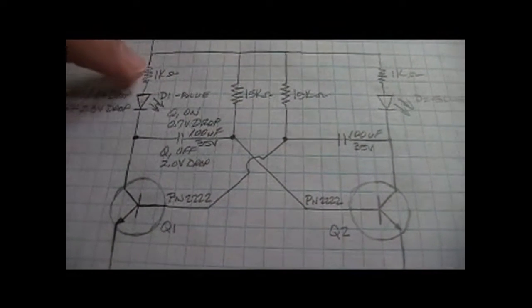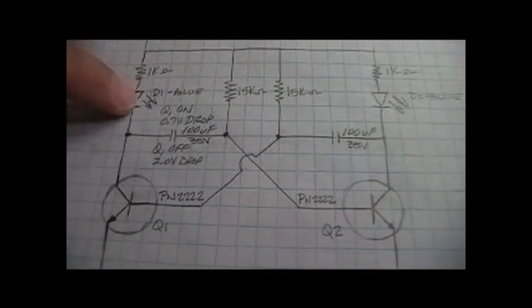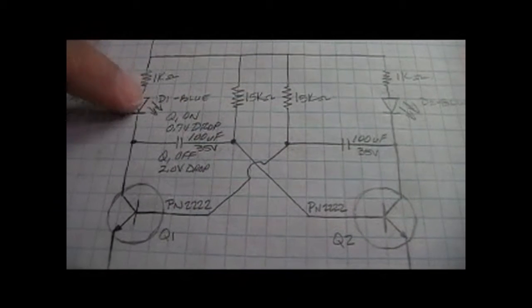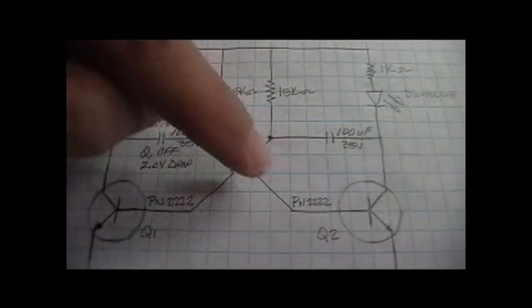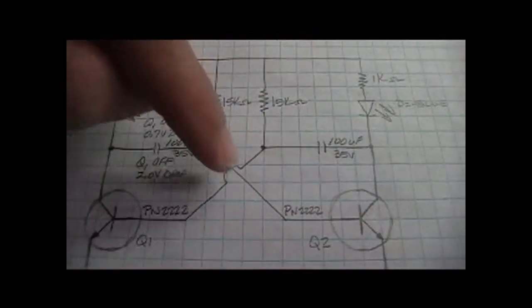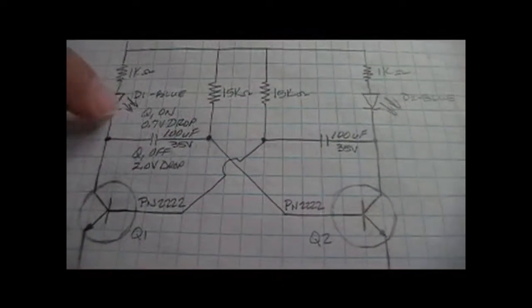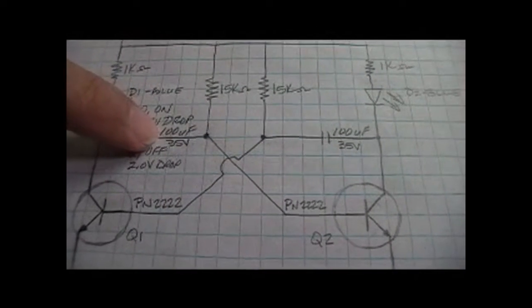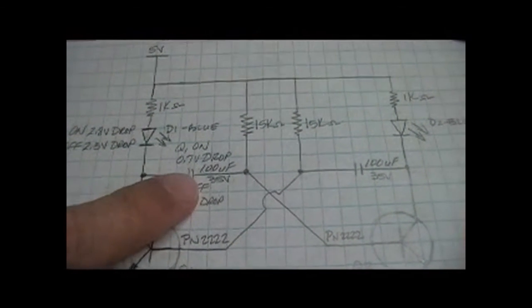There will only be current flowing for a short time while this capacitor charges. Once that initial charge time occurs, you're really looking at no current flowing, so there'll be no real drop across this resistor. You've got the drop of about 2.3 volts that you're going to lose across this LED.